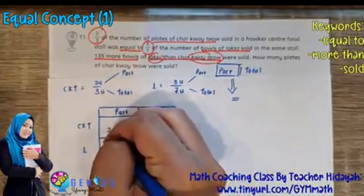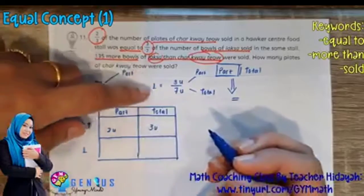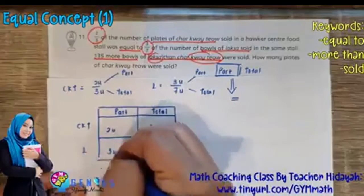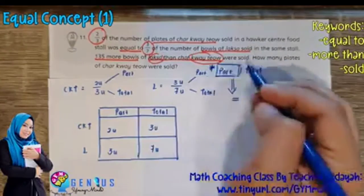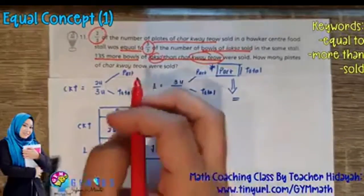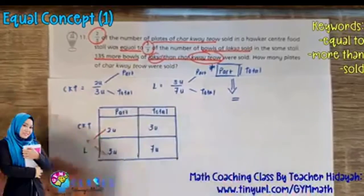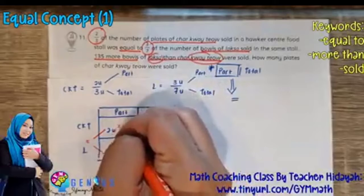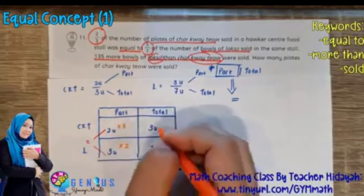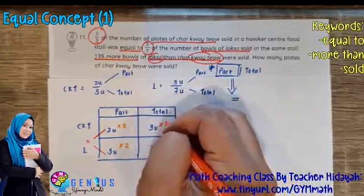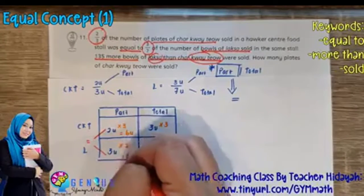Char kway teow's part is two units and its total is three units. Laksa's part is three units and its total is seven units. The parts must be made equal. So for char kway teow we multiply by three, and for laksa we multiply by two. Whatever you do to one box in a row, you must do the same to the other box. The char kway teow part becomes six units, the laksa part also becomes six units — now six equals six, meaning the number sold is equal.